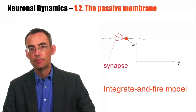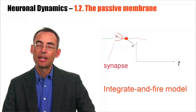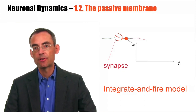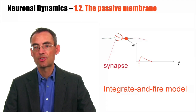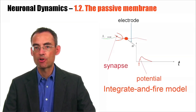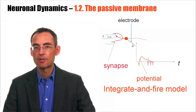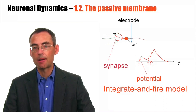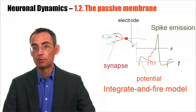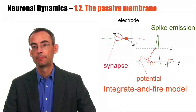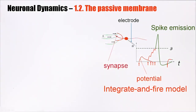In the previous lecture, we have already seen the case of an integrate-and-fire model as an example of a simplified neuron model. In an integrate-and-fire model, a pulse that comes in causes some response. This response can be measured with an electrode. If several pulses come in, these pulses add up linearly. At some point in an integrate-and-fire model, the potential hits the threshold and out goes a spike. If we talk about a passive membrane, we focus on the sub-threshold regime where everything is linear.